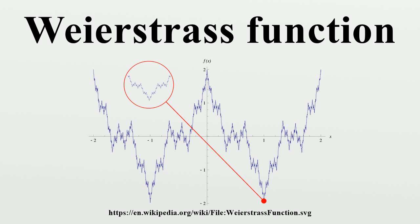To prove that f is nowhere differentiable, we consider a point and show that the function is not differentiable at that point. To do this, we construct two sequences of points x_n and x̃_n which both converge to x, having the property that lim sup and lim inf — denoting limit superior and limit inferior, respectively — of the sequence differ.